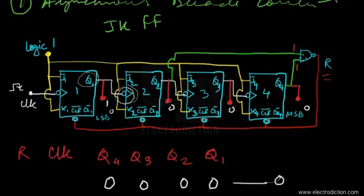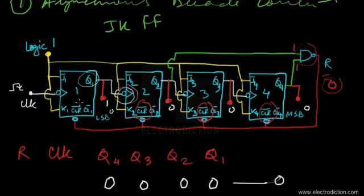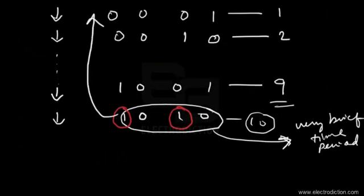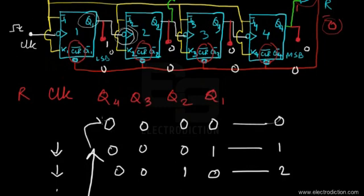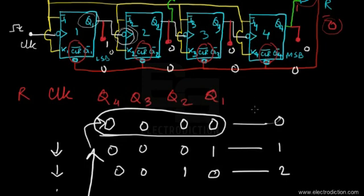When the counter enters the tenth invalid state, the outputs Q4 and Q2 are both at logic 1. These are connected to the inputs of a NAND gate. With logic 1 on both inputs, the NAND gate output becomes logic 0. This logic 0 signal is fed into the clear inputs of all the flip-flops, causing their outputs to reset back to the 0000 state, returning to where the counting began.